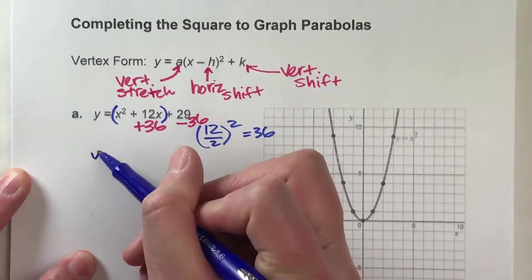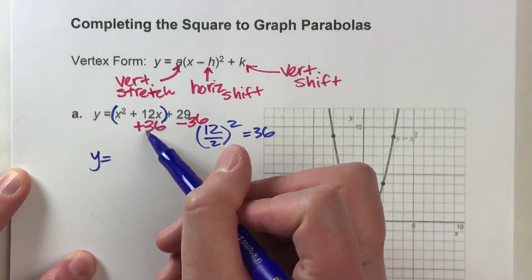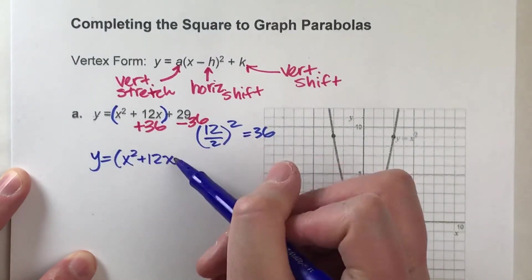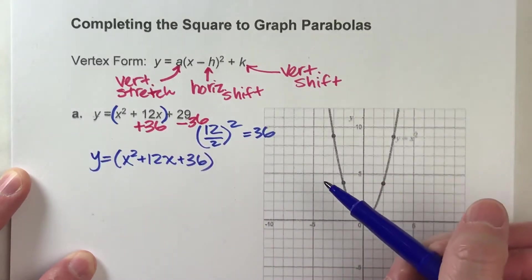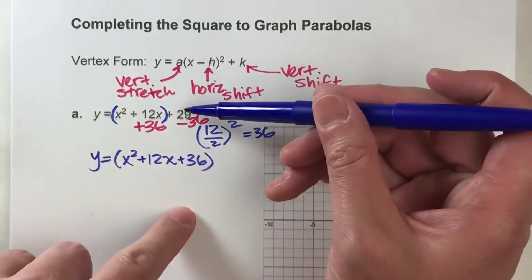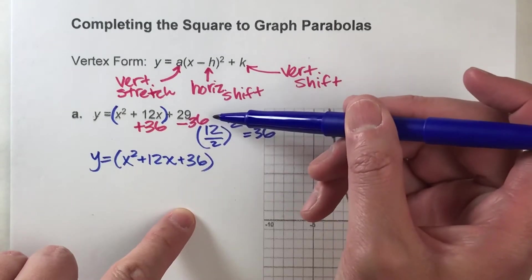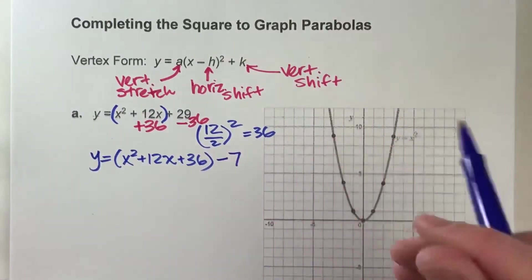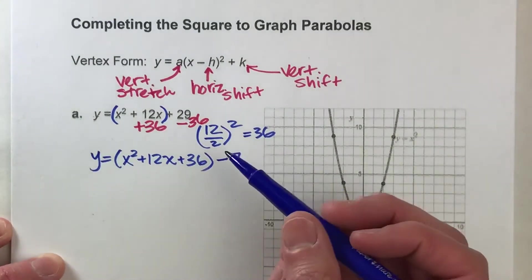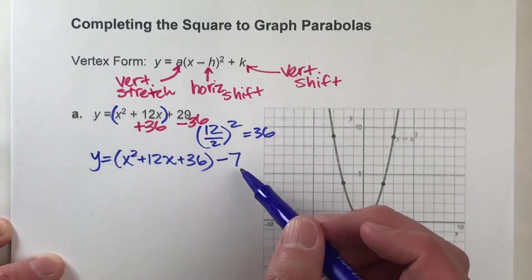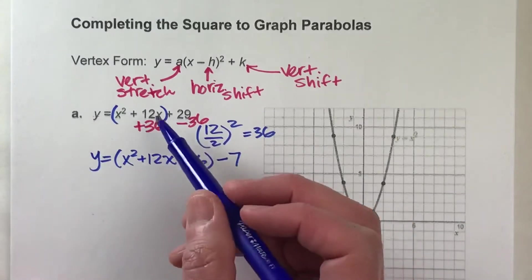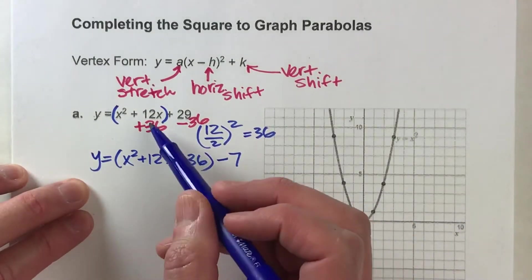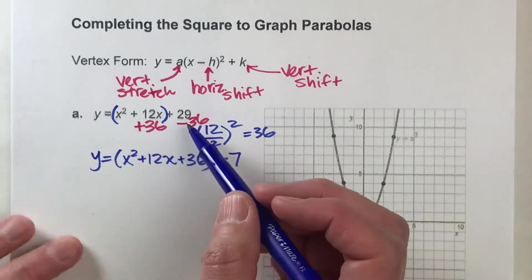So let's simplify this down a little bit. I'm going to keep this plus 36 inside the parentheses, just so it can stay with the rest of what I want to be a perfect square. And on the outside, I have a positive 29 minus 36. And 29 minus 36 is negative 7. So, so far, so good. I've made it a little bit more complicated, but we know that this equation is still equal, because all we did was we added and subtracted 36 on the same side.